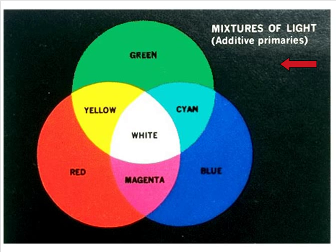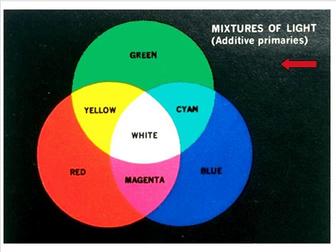All of the colors added together make white. All of the colors subtracted together make black. So this is an additive process, not a subtractive process, and that's why the colors come out that way.